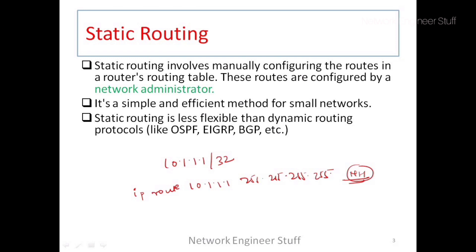In large networks, people use dynamic routing protocols such as OSPF, EIGRP, and BGP, which provide a lot of flexibility. However, in small networks, static routing is very efficient simply because it is straightforward to configure. There is nothing difficult about configuring a static route.